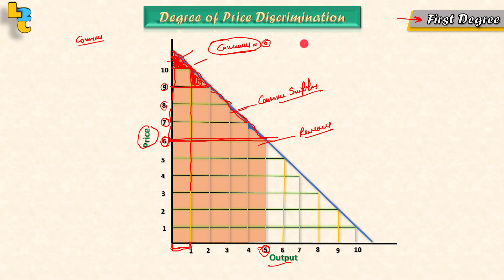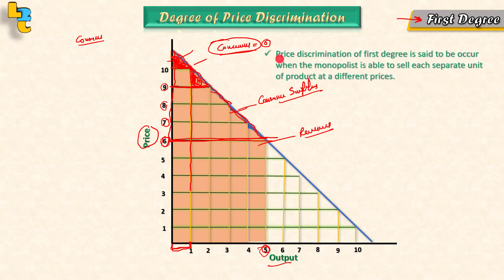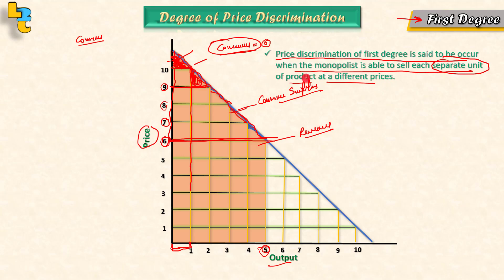By definition, first degree price discrimination is said to occur when the monopolist is able to sell each separate unit of a product at a different price. He is selling each separate unit to each consumer at different prices. This is first degree price discrimination.